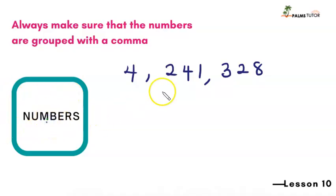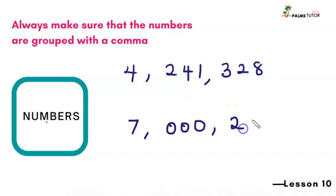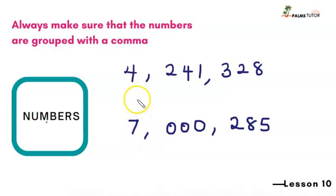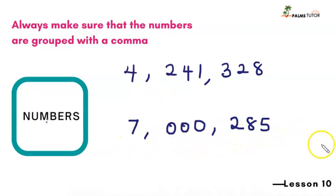Let's move on. Here we have seven, and then we have nothing in the thousands place — all zeros. So we don't say 'zero zero zero thousand.' No, we just keep that silent. When writing in numbers you must include the zeros, but in words we say: seven million, two hundred and eighty-five. After each group there's a comma — seven million, comma, then nothing in thousands, so we have two hundred and eighty-five.